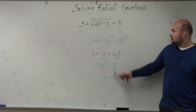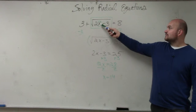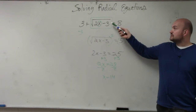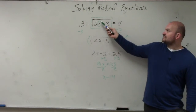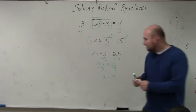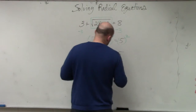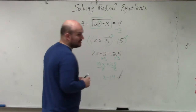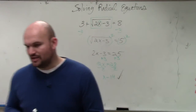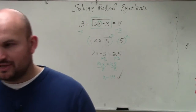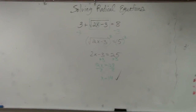So let's verify: I plug 14 back in for x. 2 times 14 is 28, minus 3 is 25, square root of 25 is 5, and 5 plus 3 is 8. So my answer is verified. Please make sure you're checking your answers, because I can guarantee there are going to be some extraneous solutions.